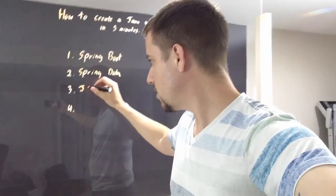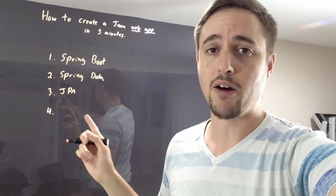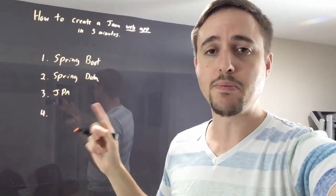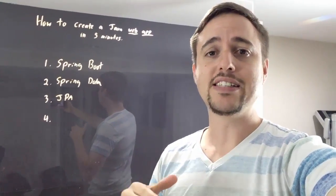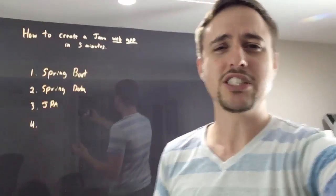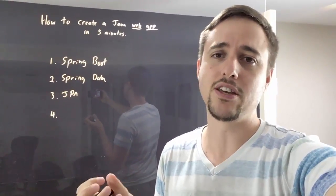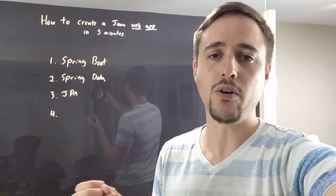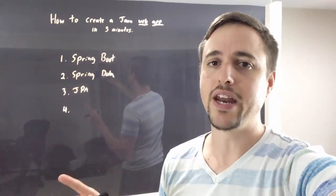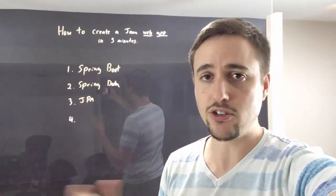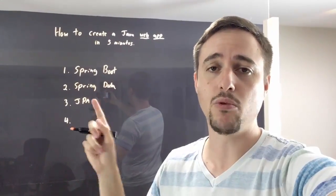The third technology is JPA — Java Persistent Annotations. JPA is not new, but it is a specification — you can think of it like an interface. There's no real implementation to it on its own, but Hibernate is what implements the JPA specification. So with Hibernate you can actually do all the database interaction, in tandem with Spring Data.